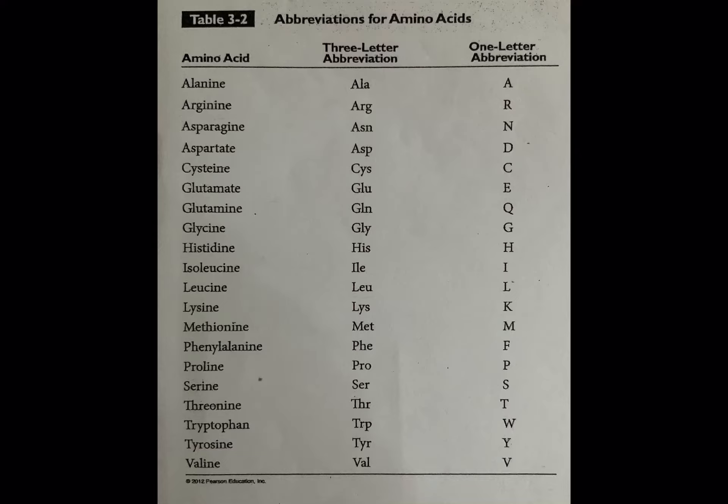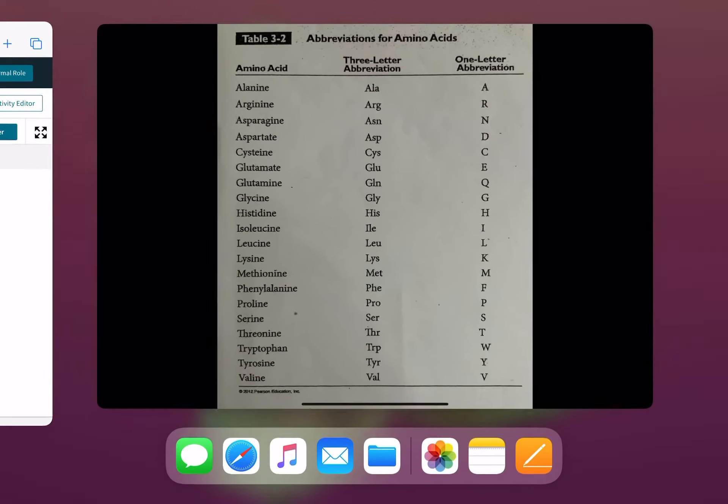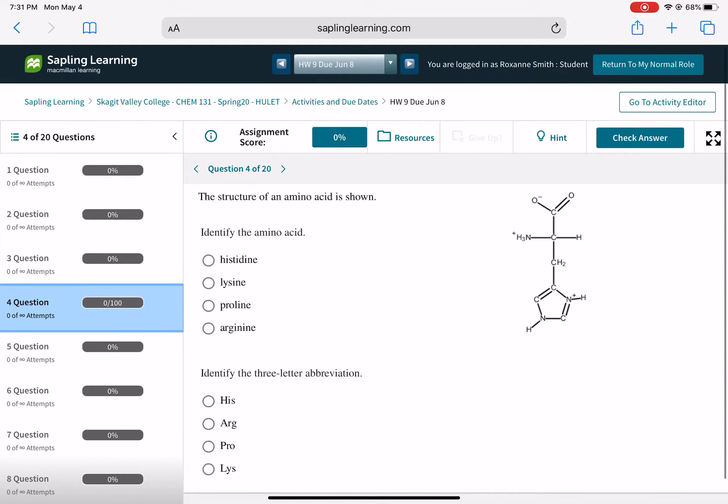But this is a list of the three-letter and one-letter abbreviations for all the amino acids. And most of them make sense. Some of them don't make a ton of sense, but most of them make sense. So consult this or something like this, because if you just Google amino acid abbreviation on the internet, you're going to come up with a whole bunch of tables that you can use to help you out with these questions.